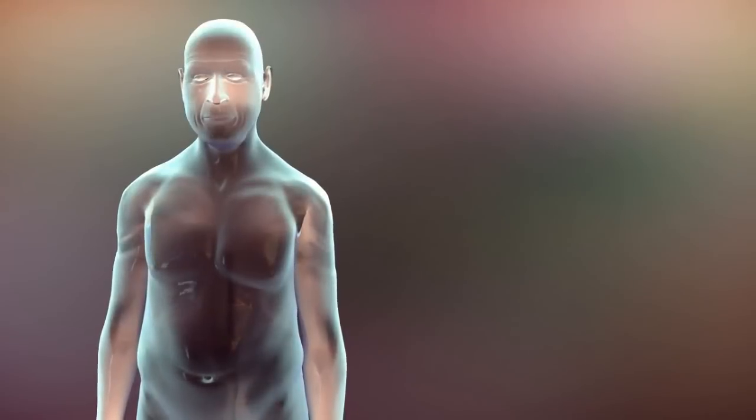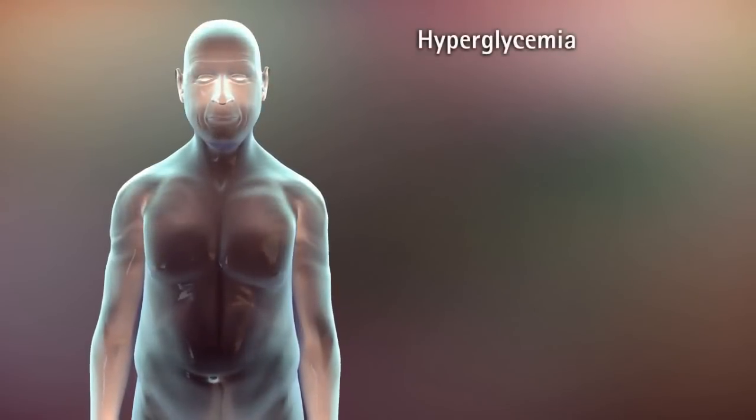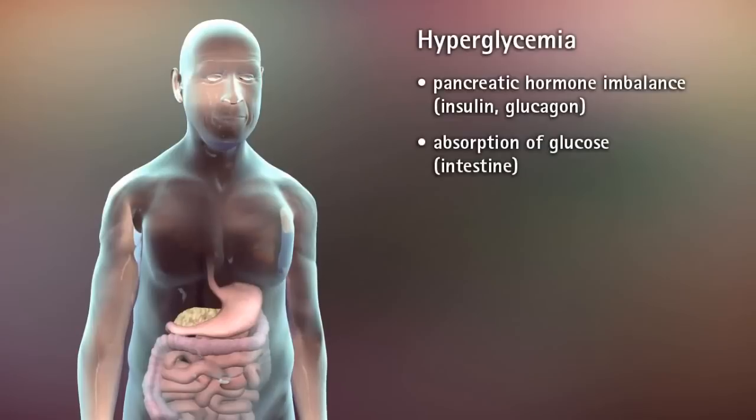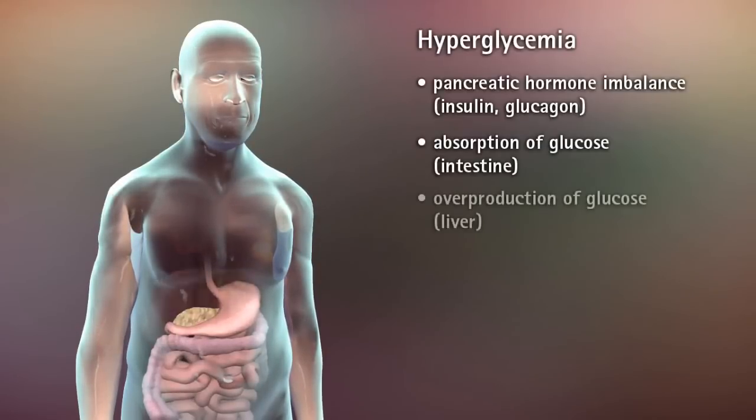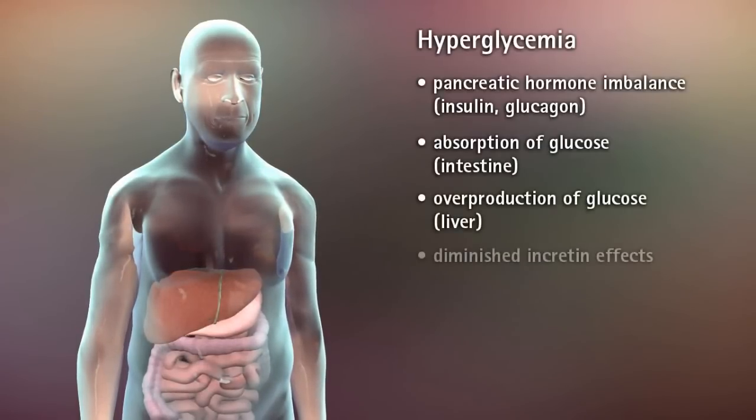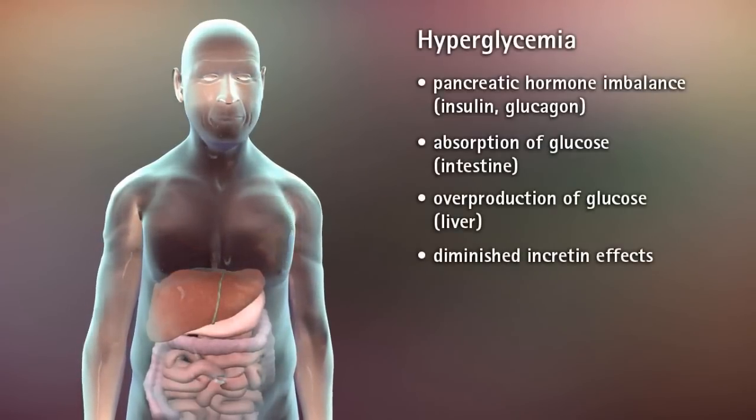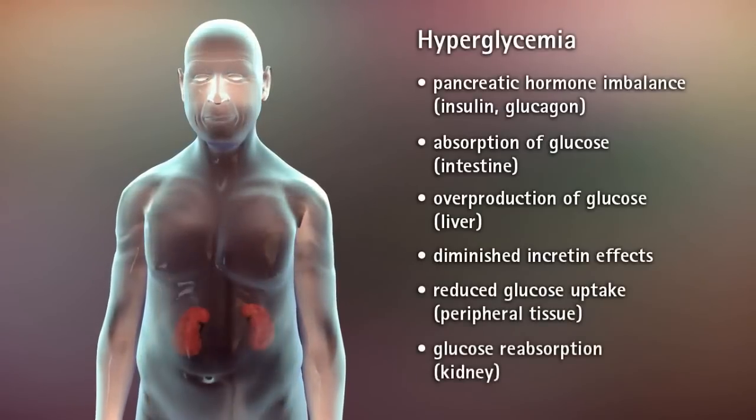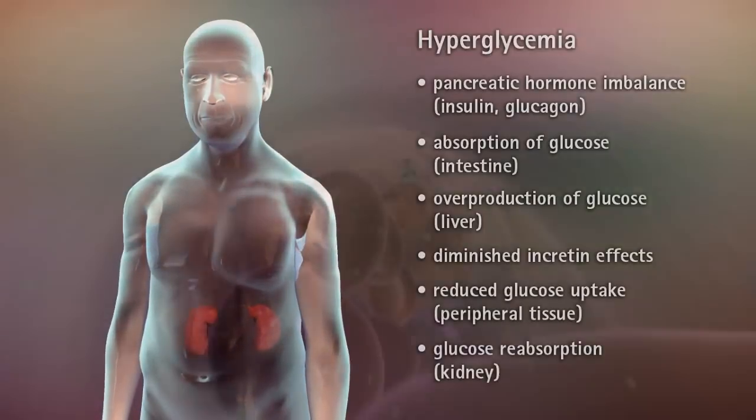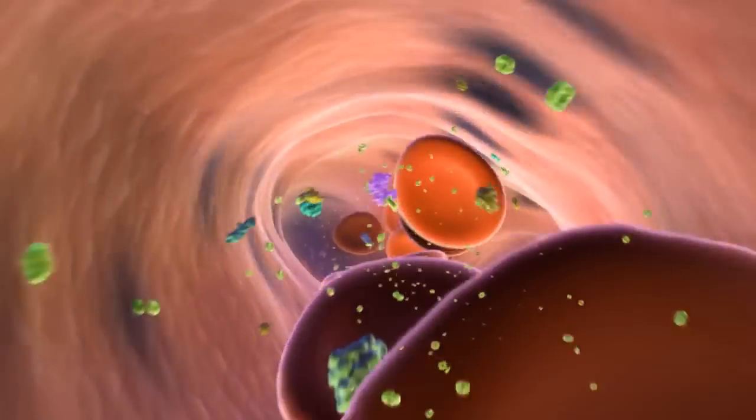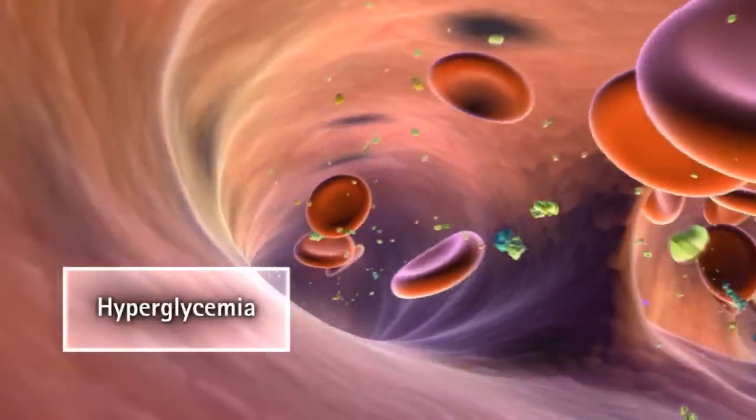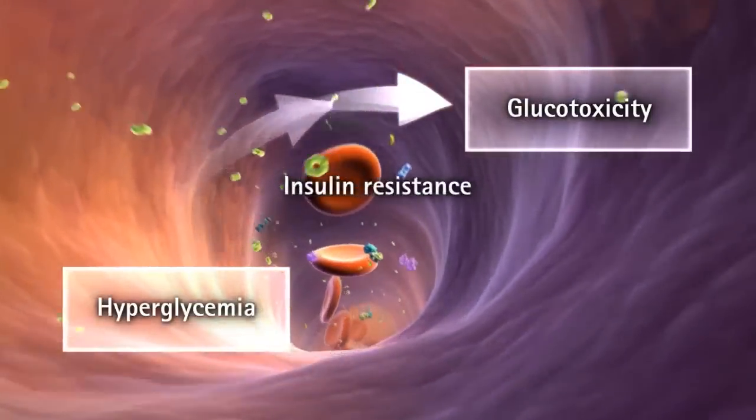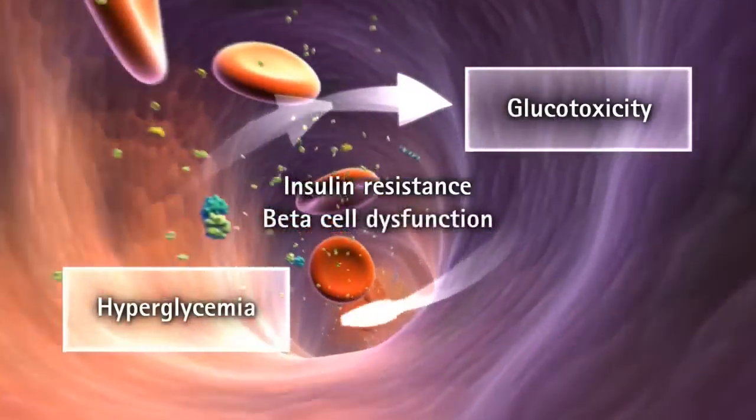In type 2 diabetes, hyperglycemia is the net result of pancreatic hormone imbalance, absorption of dietary glucose from the intestine, overproduction of glucose by the liver, diminished incretin effects, reduced uptake of glucose by peripheral tissues, and reabsorption of glucose by the kidney. Over time, these factors contribute to the sustained hyperglycemia that leads to glucotoxicity, which worsens insulin resistance and contributes to beta cell dysfunction.